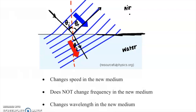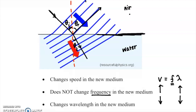Notice that frequency does not change in the new medium — it's like the identity of the wave and stays the same no matter what it passes through. But since V = fλ, if frequency stays the same and speed changes, the wavelength must change too. If V increases, then λ increases; if V decreases, then λ decreases. You can see this in the picture — the wavelength in glass is shorter than the incoming wavelength.